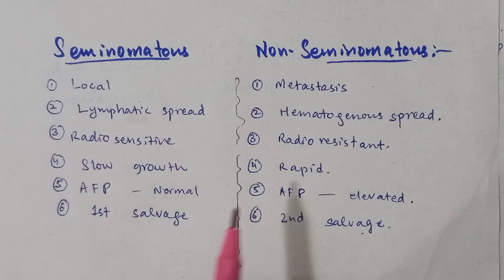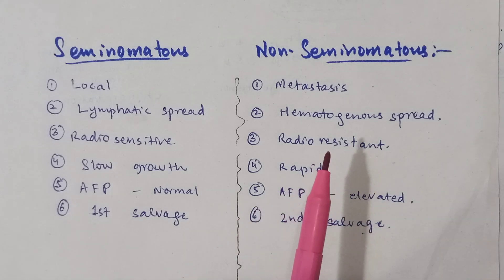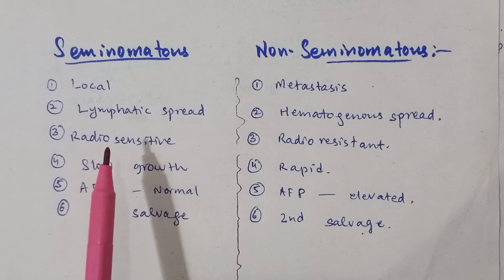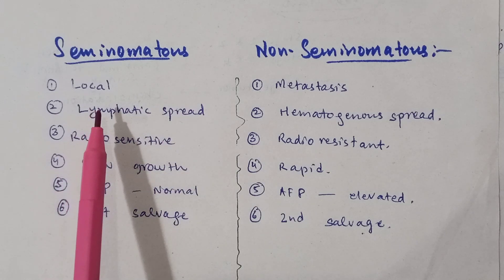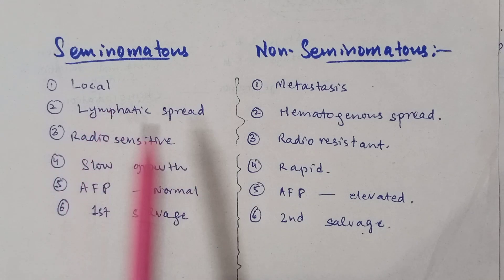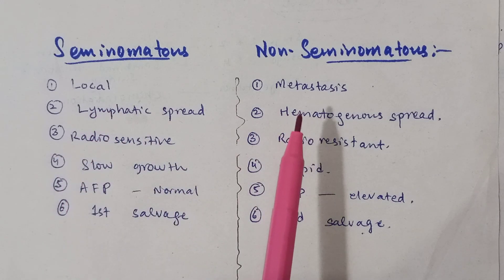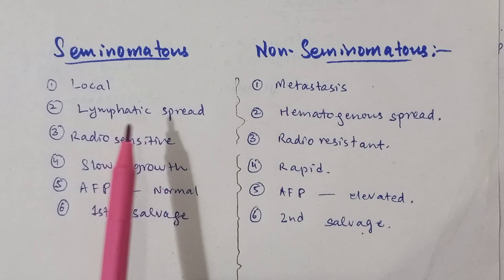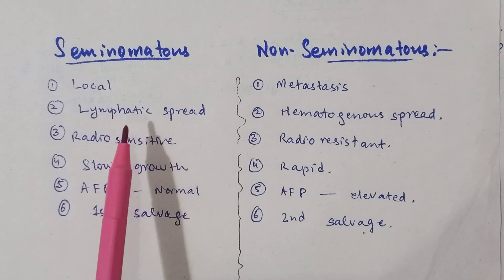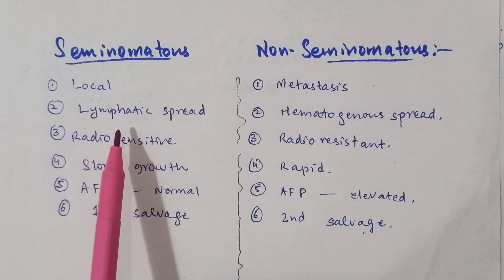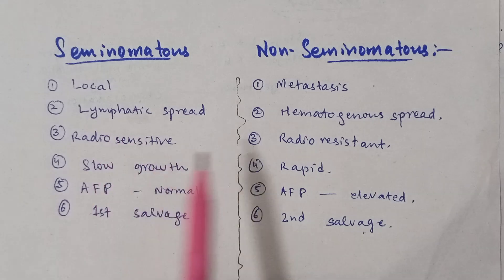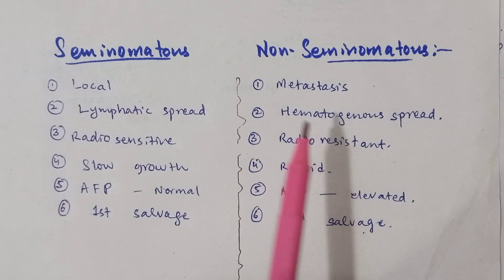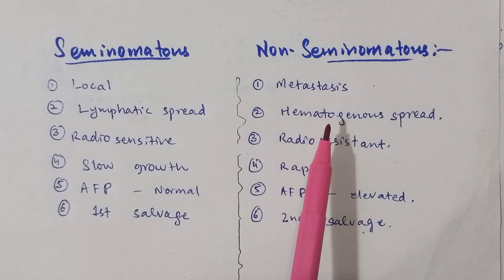Seminomatous and non-seminomatous tumours. Seminomatous are mostly localized tumours, while non-seminomatous shows metastasis. Seminomatous tumours spread through lymphatics, whereas hematogenous spread occurs in non-seminomatous tumours.